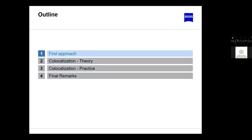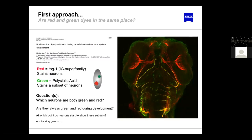The first idea is to figure out if, on a macroscopic scale, a subset of cells in an organism are expressing or are labeled with two markers for two different proteins — for example GFP and mCherry, or immunolabels for species A or species B. What we see here is part of embryo development where all the red tags stain neurons — all neurons are red.